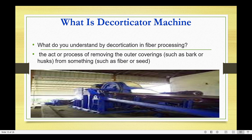A decorticator machine is used for Ramie fiber processing. Its purpose is the act of removing the outer covering — such as bark or husk — from something such as fiber and seed.